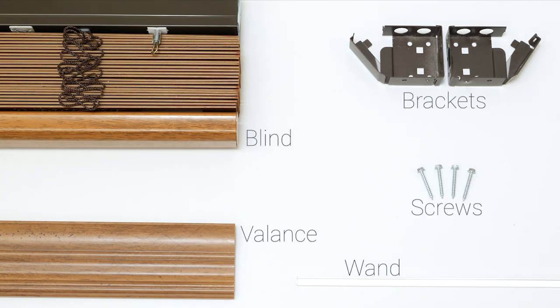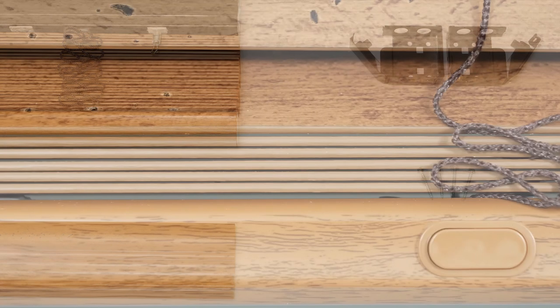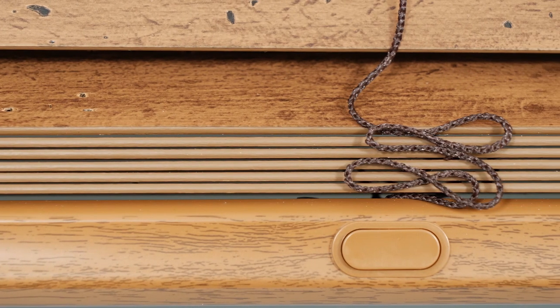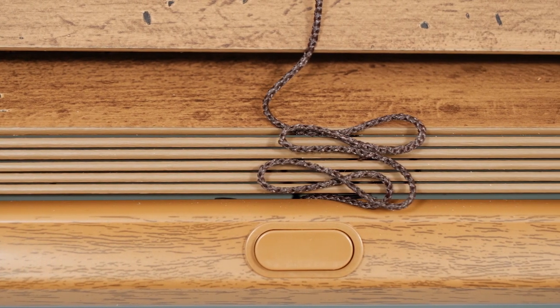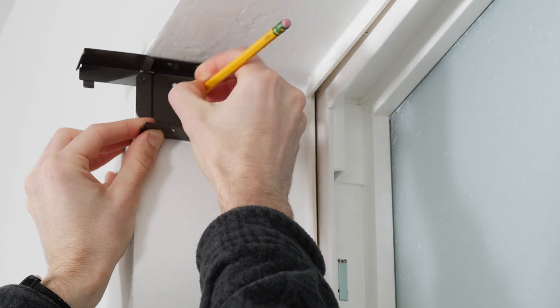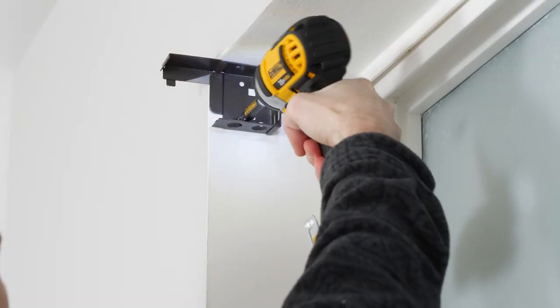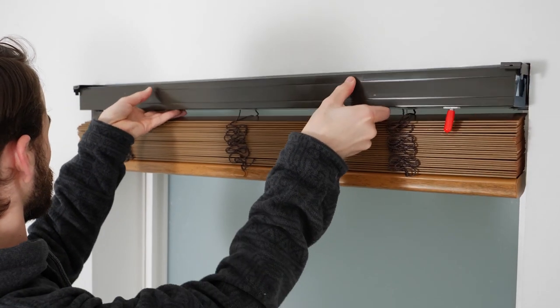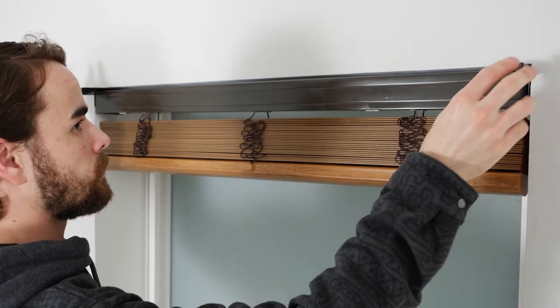Today, I'm installing an inside mount wood blind. Depending on the blinds you ordered, the pieces or parts you have may be a little different, and that's okay. You'll follow basically the same steps I'll go through here to hang them. Just be sure to check the instructions that came with your product before you start.